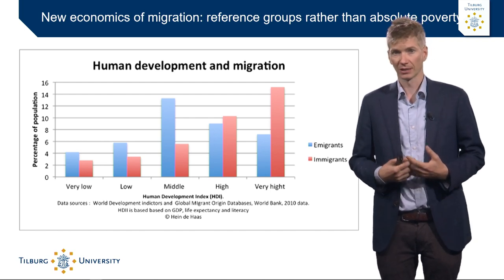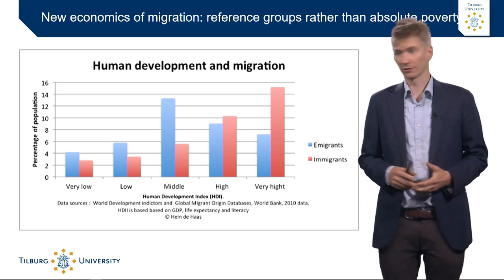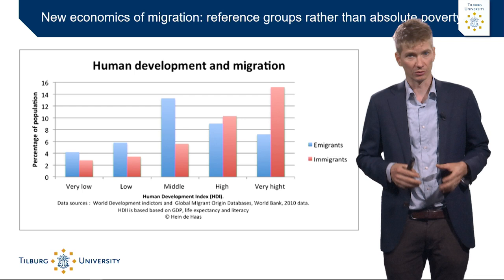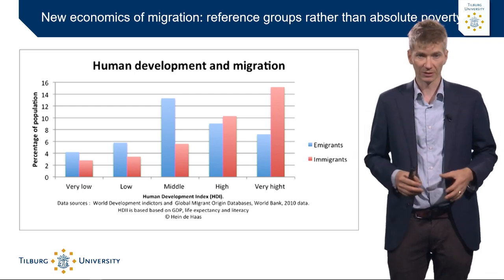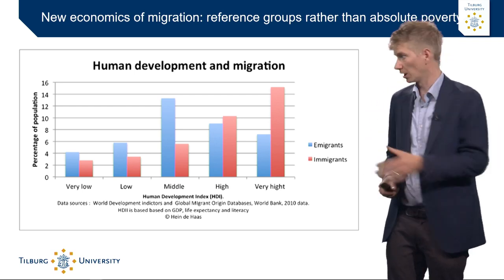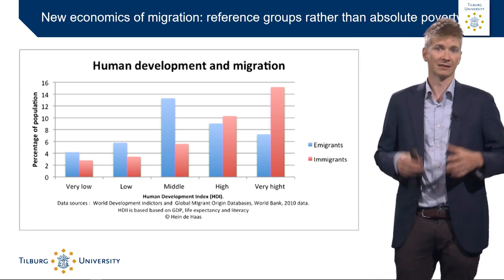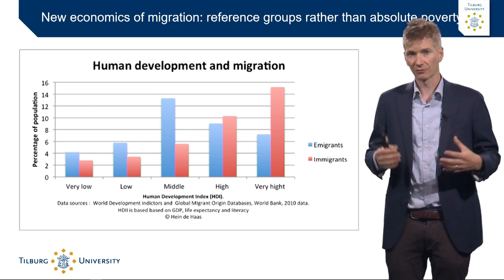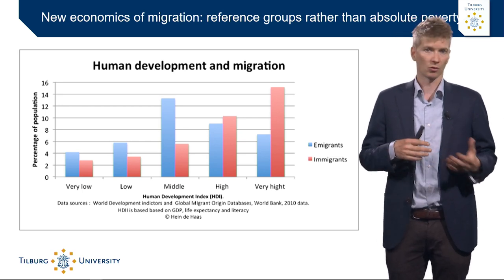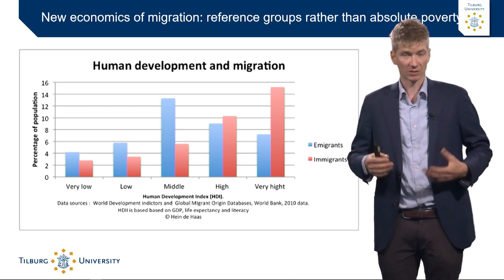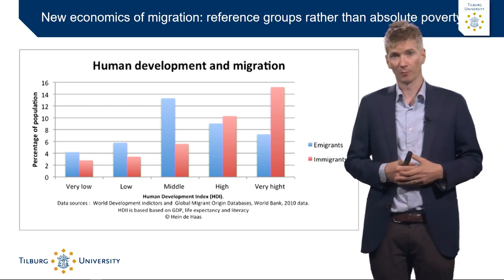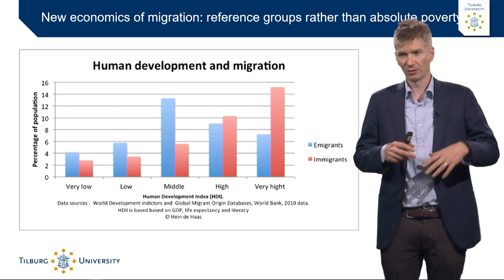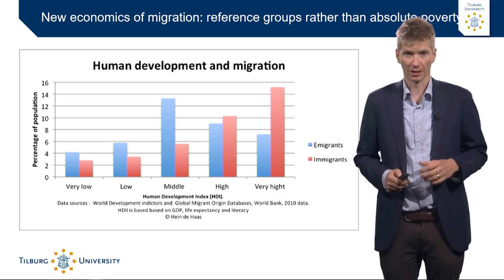This is something we also see when looking at the graph here — namely that people who live in regions with very low economic development and a lot of poverty, on the left-hand side of this bar graph, show a rather low tendency to emigrate compared to people who live in middle-income countries, because they have more money available to migrate. That is where the concept of relative deprivation really kicks in, where people start to compare themselves with others.